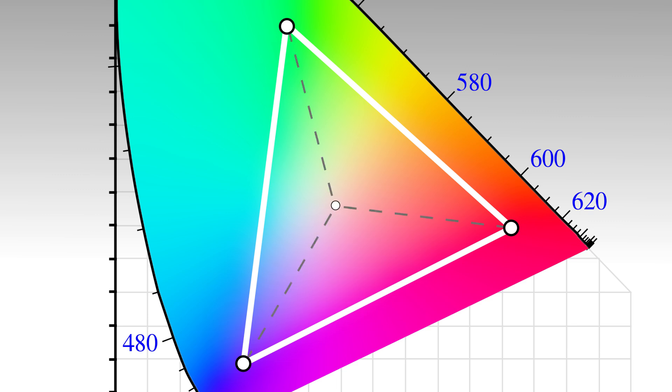Now usually there's a white point labeled with a color temperature. This is where the most intense red, green, and blue primaries fire together to create white.